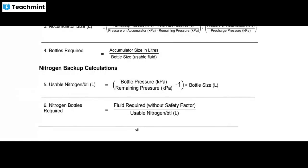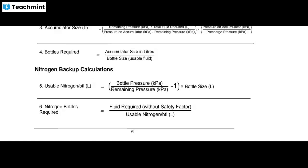For nitrogen backup calculation: usable nitrogen equals bottle pressure divided by remaining pressure minus one, multiplied by bottle size in liters. The total number of nitrogen bottles required equals fluid required without safety factor minus usable nitrogen in liters. This is an important formula.